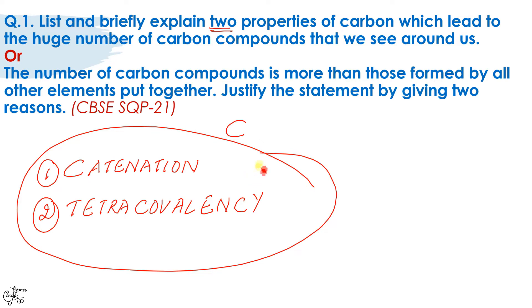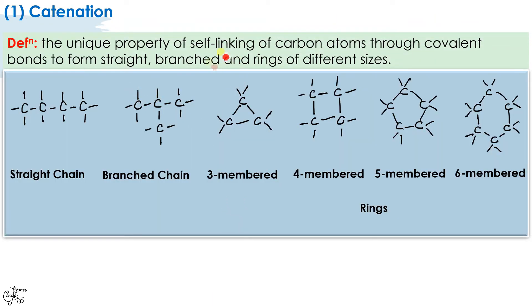Now before I move on to what you're supposed to write as answer, we'll quickly understand what is catenation and tetracovalency. Now catenation, just remember one word: catenation implies self-linking, linking with itself. So carbon has this unique ability, a special ability of linking with itself. It can link in the form of straight chain, you can see there's a straight chain here, or branches. Branches means, let's say one-two-three, you have a branch at two, right? Or it could be in the form of rings, and for formation of ring you require at least three members.